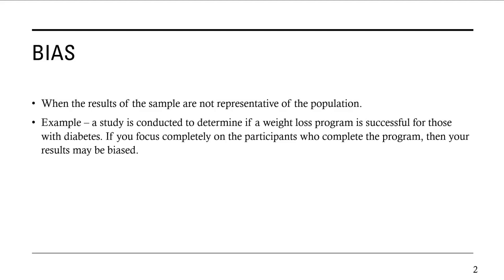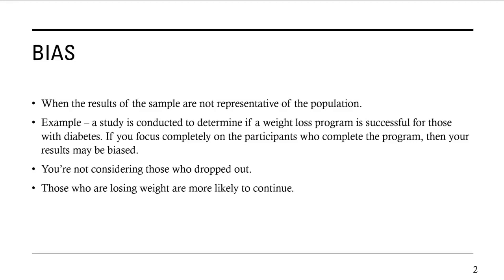For example, a study is conducted to determine if a weight loss program is successful for those with diabetes. But if the study focuses completely on the participants who complete the program, the results may be biased. If the results only talk about those who completed the program, they may be more favorable because you're not considering those who dropped out. Those who drop out are usually those who cannot stick with the program, while those who stay are most likely the ones seeing success and losing weight. So if you only focus on those who complete the program, your results are going to be more favorable, which means you have biased results — the sample is not representative of the population.